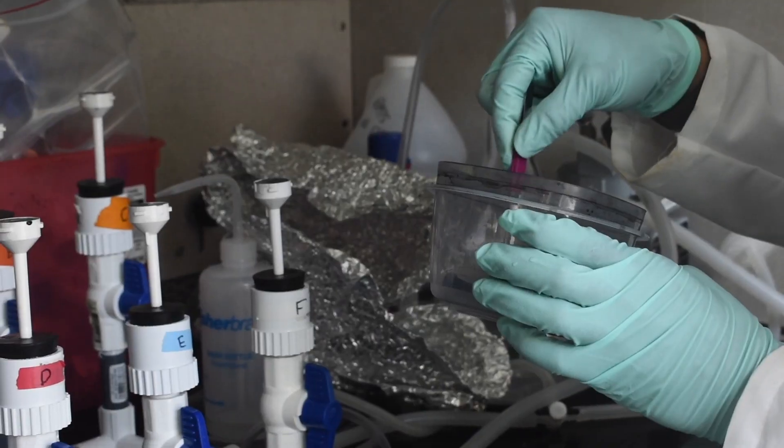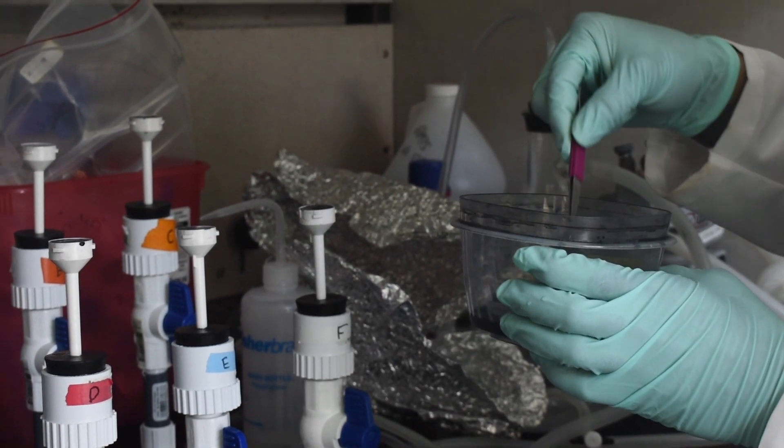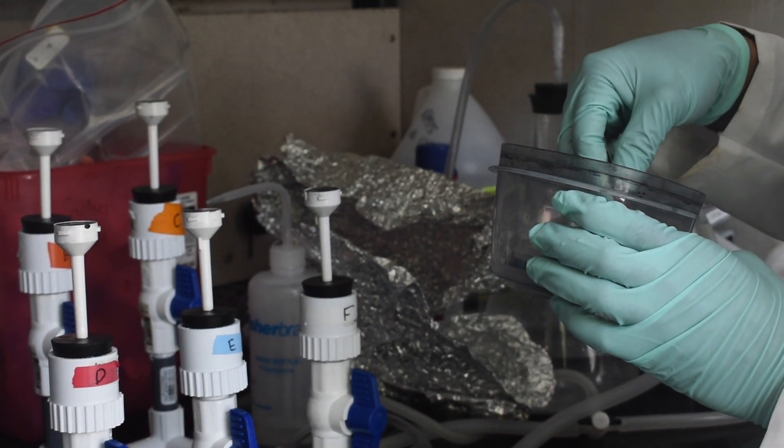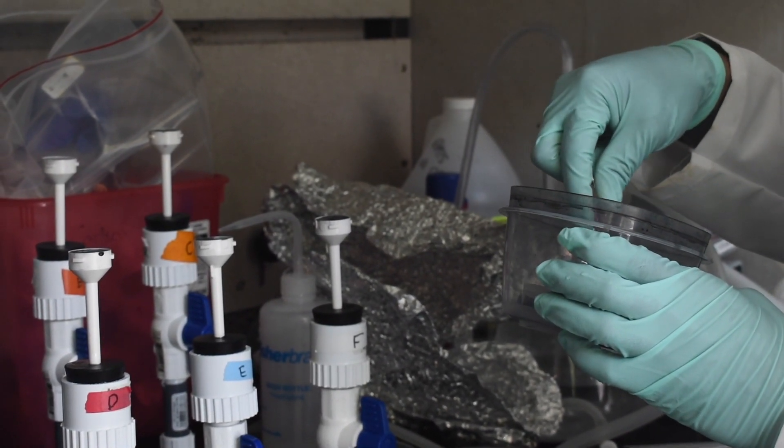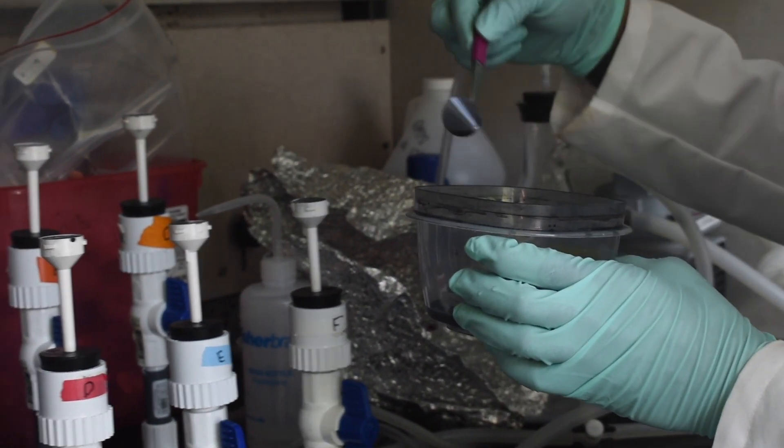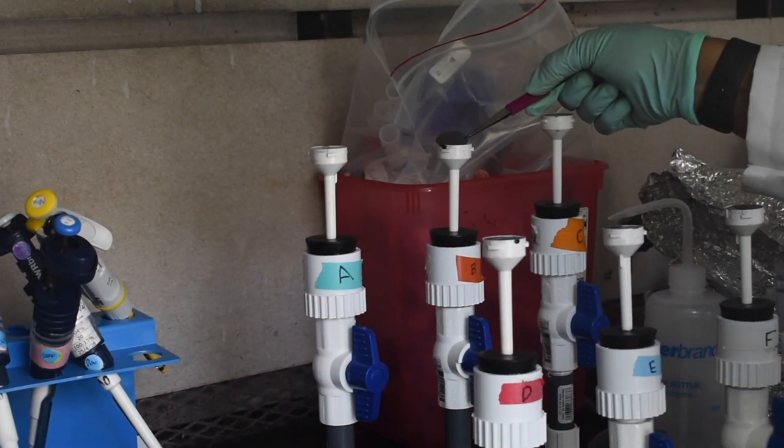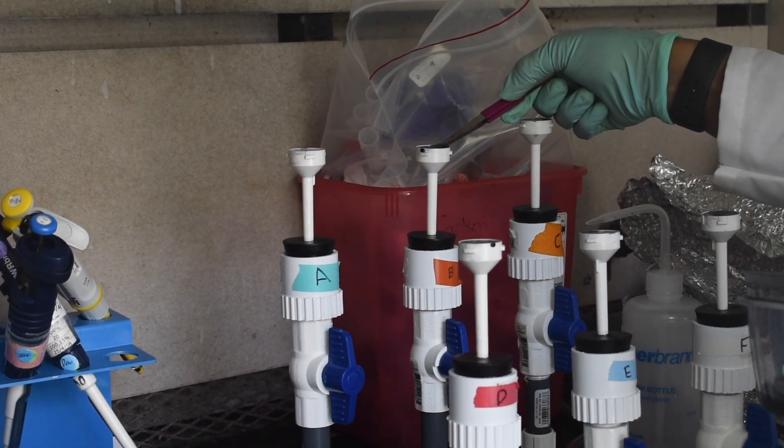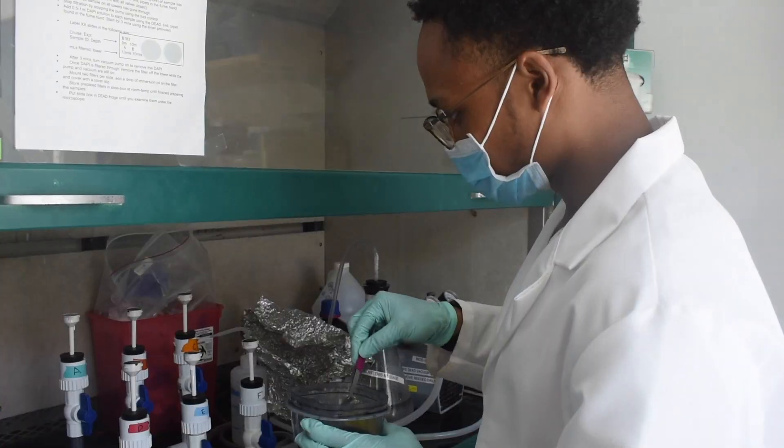In order to see the bacteria on the microscope we need to first stain the filter with a carpet stain called Irgalan Black and we stain for about 15 minutes to overnight to make it kind of this gray color and then we can use the filter.